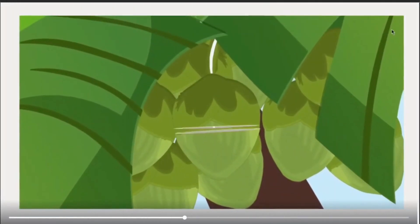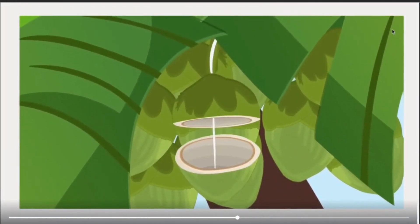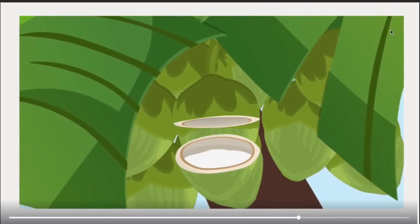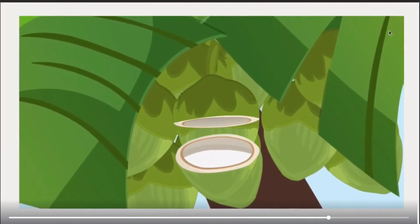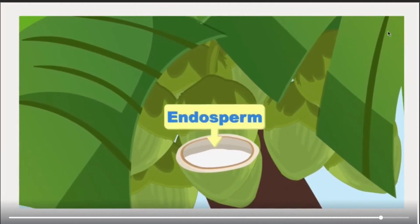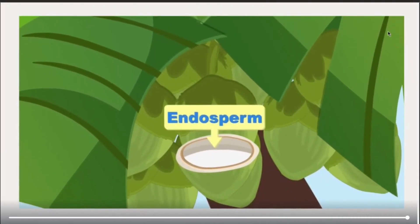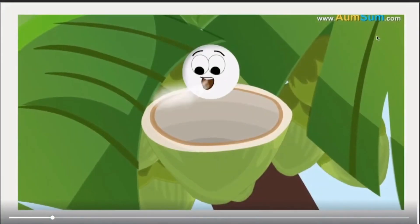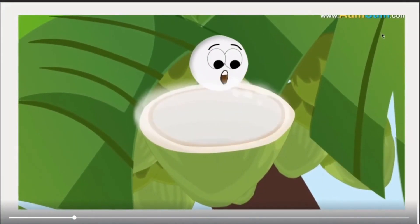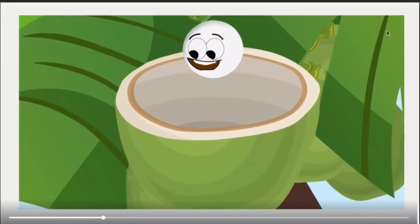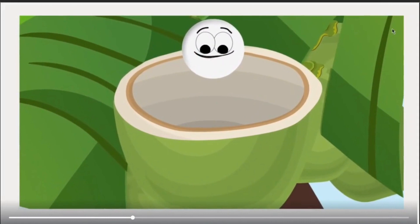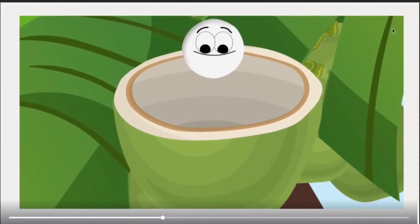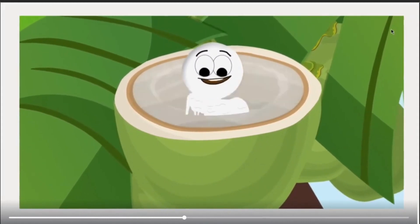As you can see, while going to other parts of the plant, some water reaches the coconut. This water which reaches the coconut is known as the endosperm. This endosperm is basically used for the growth of the coconut.